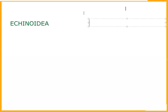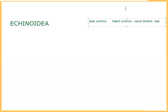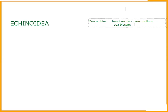First of all, we'll write the common name. The class Echinoidea is commonly called sea urchins. Some are called heart urchins, some are called sand dollars, some are called sea biscuits, and some are called cake urchins.